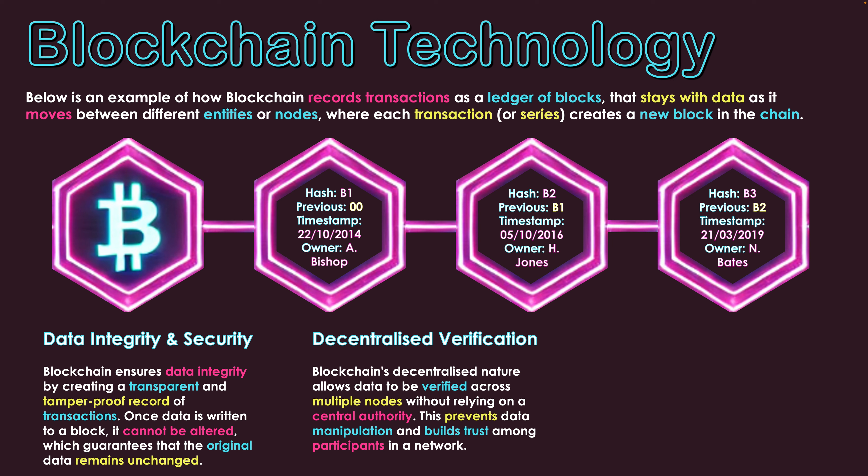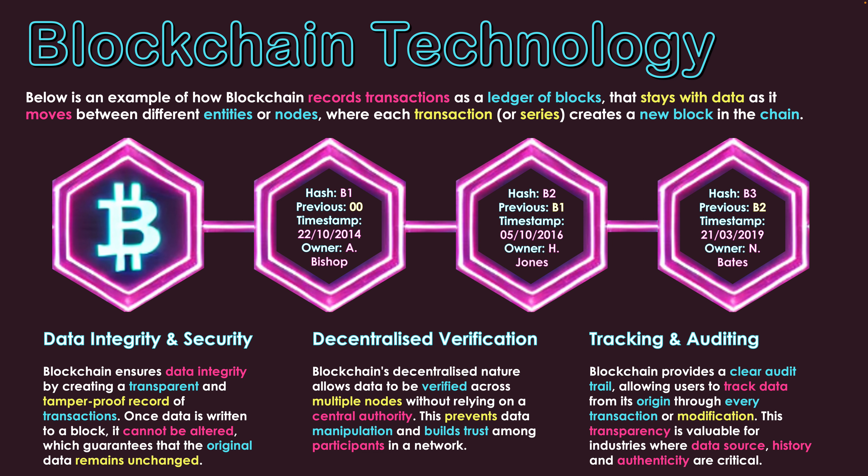The next point is decentralized verification. Blockchain's decentralized nature allows data to be verified across multiple nodes. As Bitcoin is transferred between owners, they store it on their own nodes and can sell it to someone else. The history of the crypto moves with the transactions to new systems, with all the blocks and history moving with it. It doesn't rely on a central authority, which prevents data manipulation and builds trust among network participants. When someone receives it, they can see the full history of how it has moved around the network.